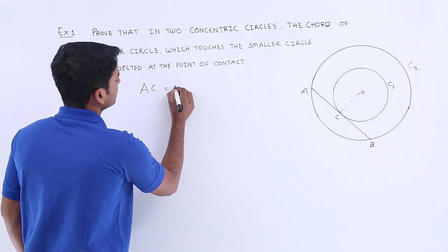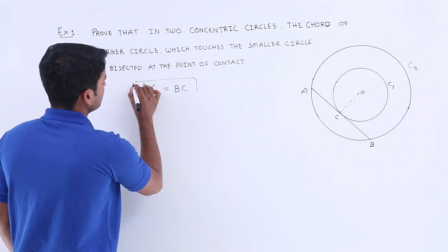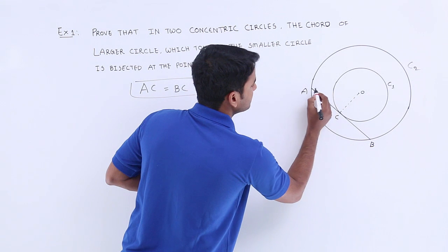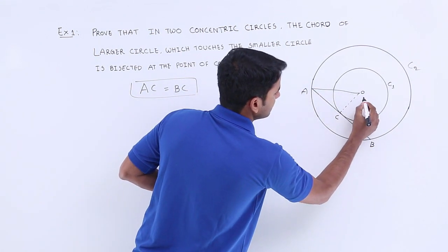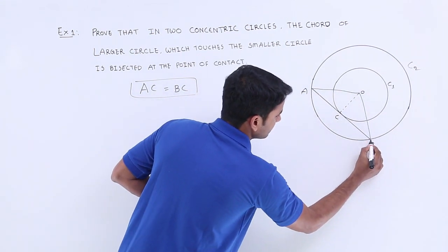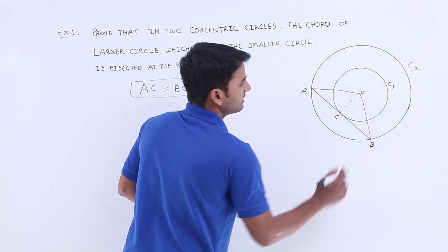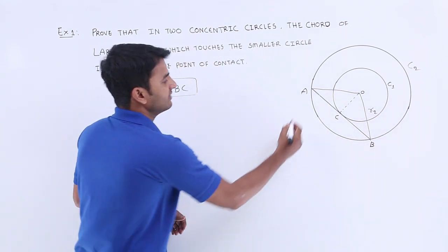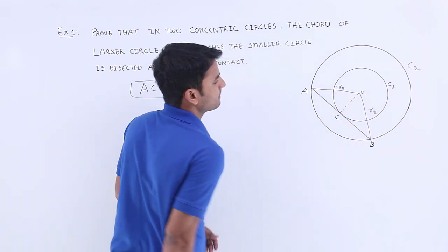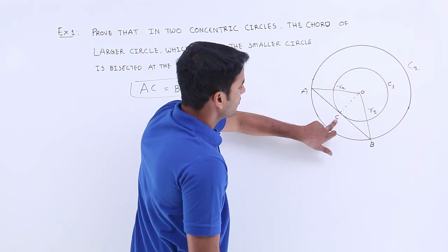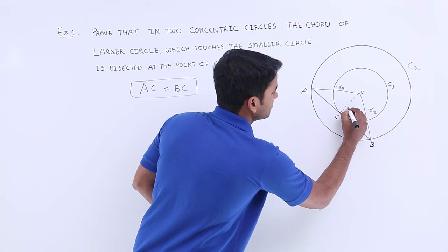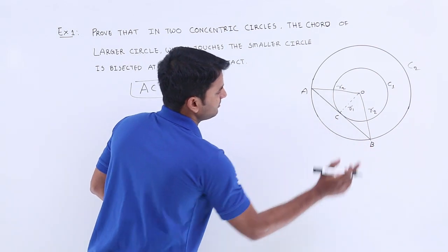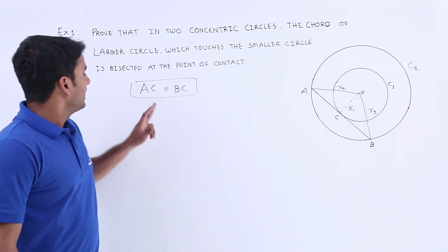If we join point O to point A and point O to point B, then OB is the radius of the larger circle, which we consider as r2. OA is also r2, and OC is the radius of the smaller circle, that is r1. We have to find AC and CB to prove that AC equals BC.